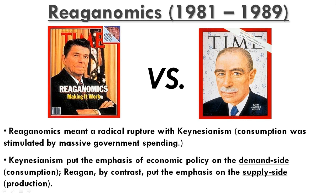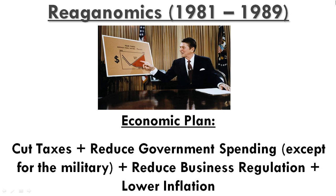Keynesianism put the emphasis of economic policy on the demand side — on consumption — whereas Reagan, by contrast, put the emphasis on the supply side, or on production.